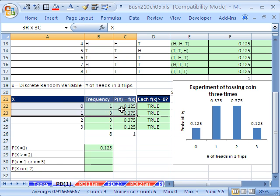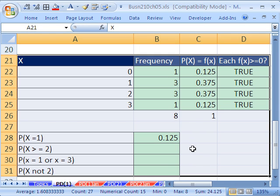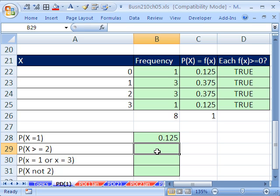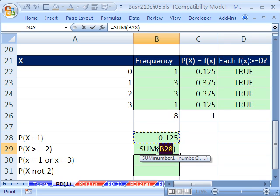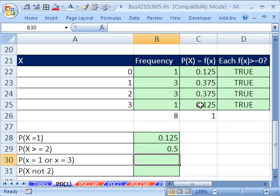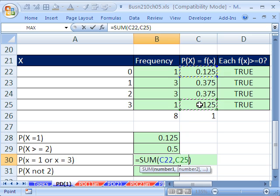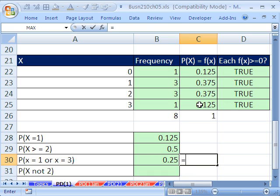Probability of x equals 1, boom, we got it right there. Probability of x greater than or equal to 2, that means the 2 is included. I'm going to Alt equals, which is my keyboard shortcut for AutoSum. And I'm going to add those two up. How about x equals 1 or x equals 3? Alt equals, and I'm going to say x equals 1, and I'm going to hold Control, and then click on x equals 3. And then Tab. Another totally valid way to do that is that plus this.